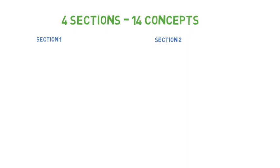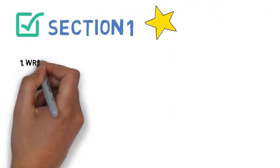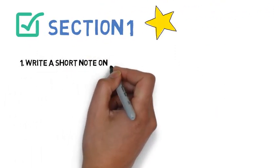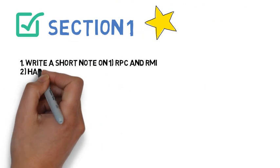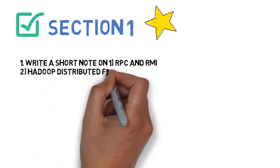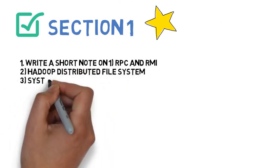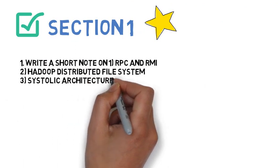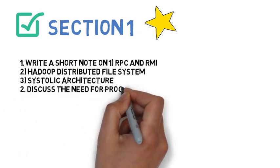So let's get started with it. We will be learning them in like four sections. Section 1 and Section 2 will be very important. So let's get started with Section 1, wherein the first question is short note on: first is RPC and RMI, second is Hadoop Distributed File System, third is Systolic Architecture.